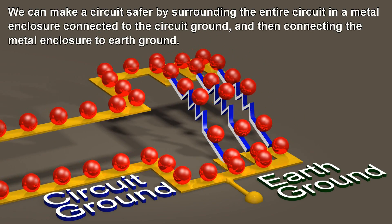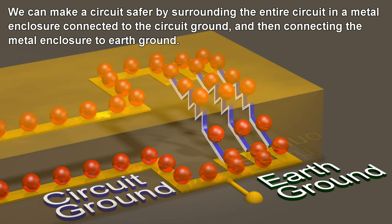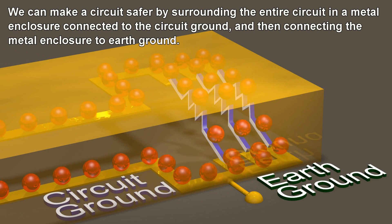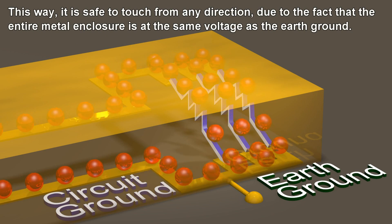We can make a circuit safer by surrounding the entire circuit in a metal enclosure connected to the circuit ground, and then connecting the metal enclosure to earth ground. This way, it is safe to touch from any direction, due to the fact that the entire metal enclosure is at the same voltage as the earth ground.